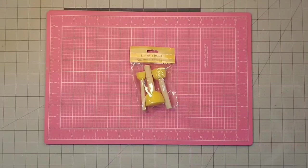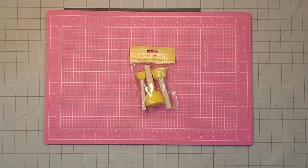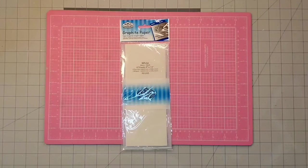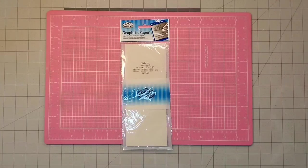I'm also going to be using one of these spouncers that I got at the Dollar Tree, and finally, I'm going to be using some white graphite paper that I ordered from Amazon.